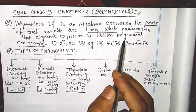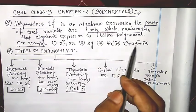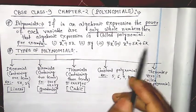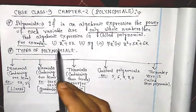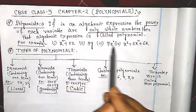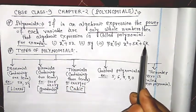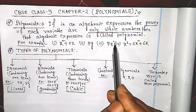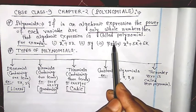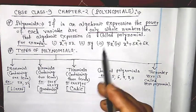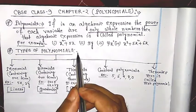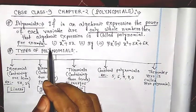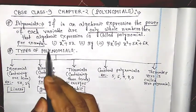Another example is x cubed plus 5x squared plus 6x. This is also a polynomial. In all four examples of polynomials, all the powers of the variable are whole numbers — 0, 1, 2, 3, 4. So these are examples of polynomials.